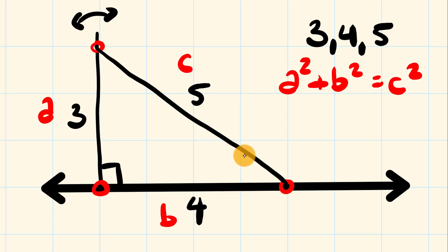What this means is if you were to square the distance of the shorter side here, we have three squared, and we add that to the other shorter side squared, which is four squared, it is going to be equal to the longer side here, which is five squared.